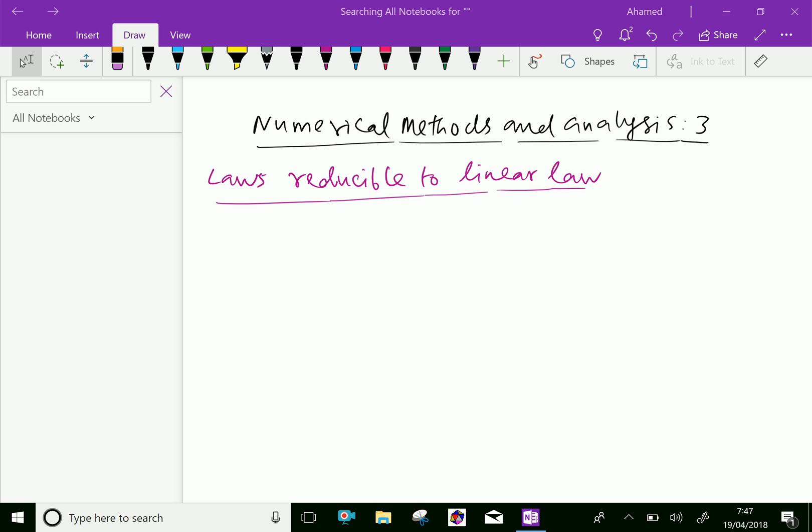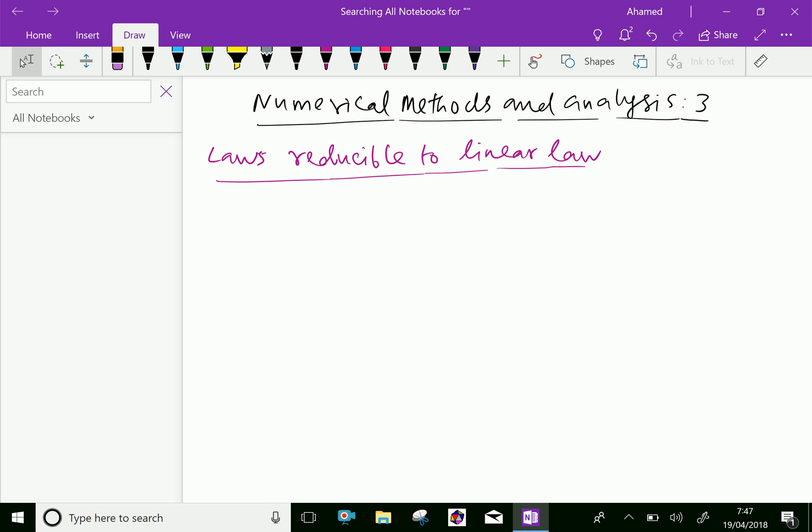Let us discuss one by one. First, we will take one law here: y = a x^n, where a and n are constants.